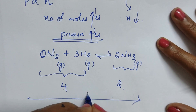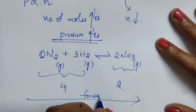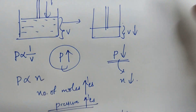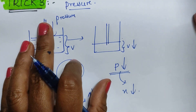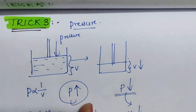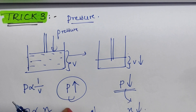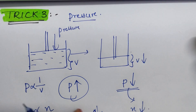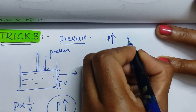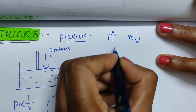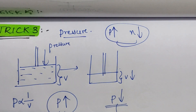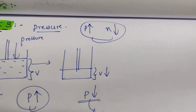When pressure is increased, the reaction shifts toward fewer moles — the forward direction — giving 2 moles instead of 4. So increasing pressure shifts equilibrium toward fewer gaseous moles. That is Trick Number Three on pressure.